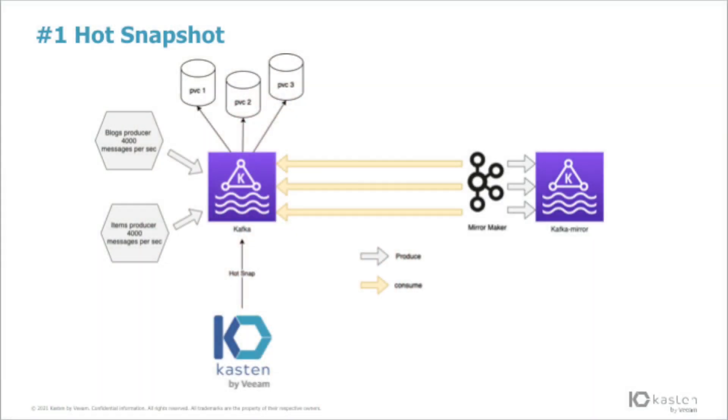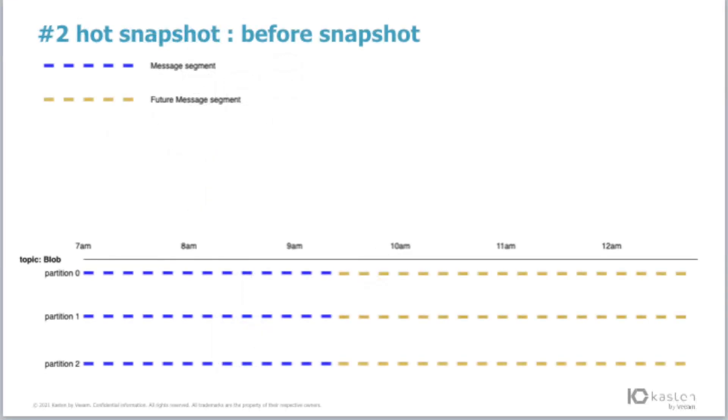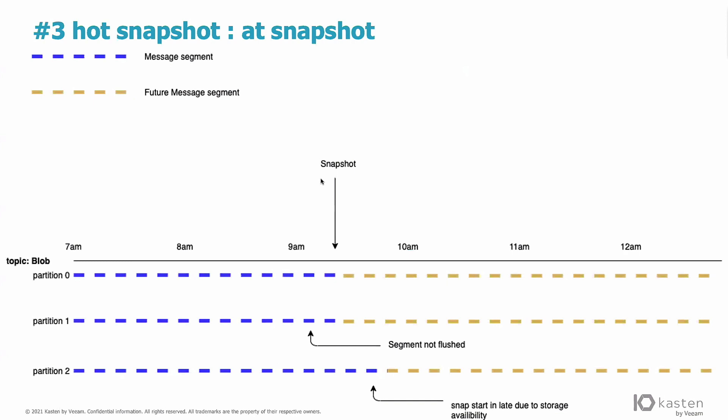So now I have two strategies. The first strategy of backing up is the hot snapshot. So the hot snapshot, what I do, I just use Kasten to take a snapshot of all the data, of all the storage. So if I take a blog, it's made of three partitions that are evenly distributed. But when I do the snapshot, what's going to happen?